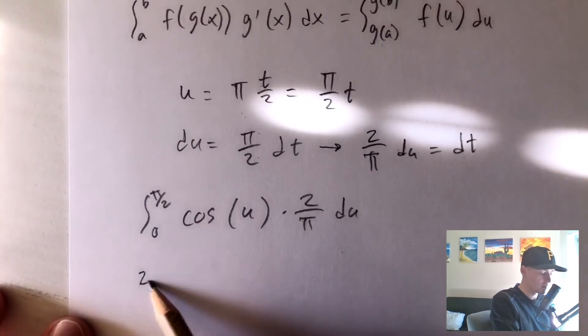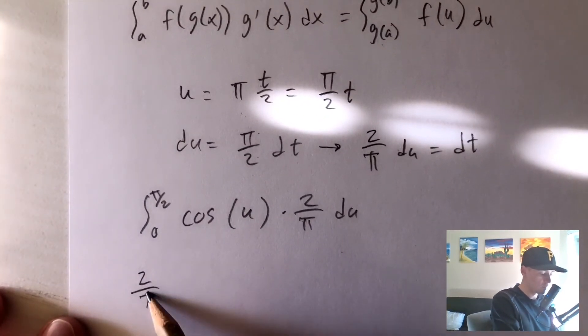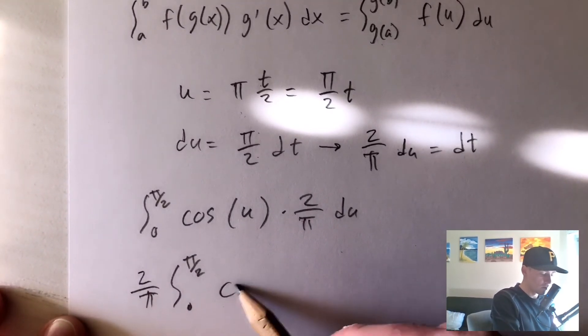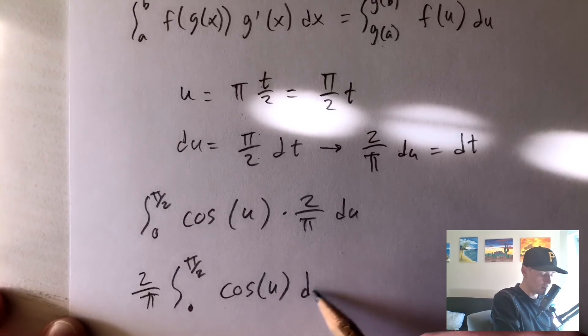So that's going to give us 2 over pi times the integral from 0 to pi over 2 of cosine u du.